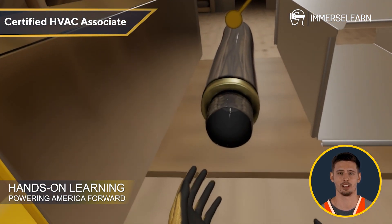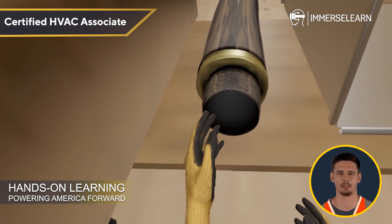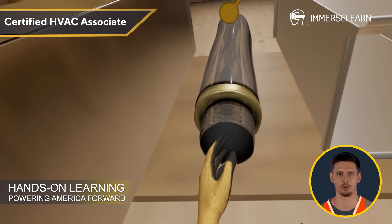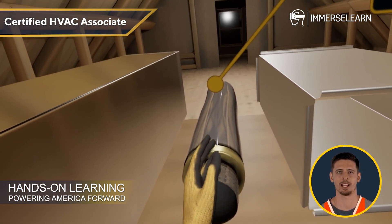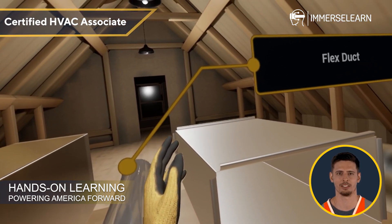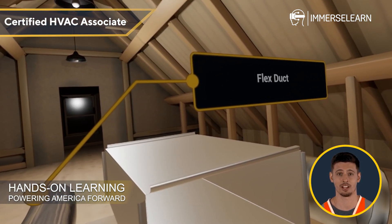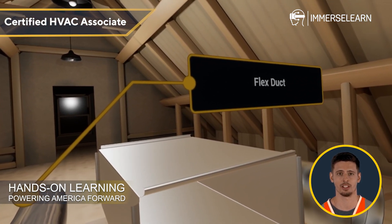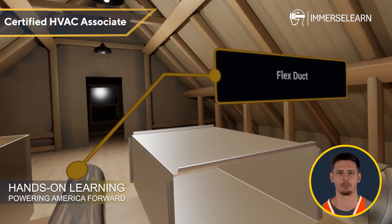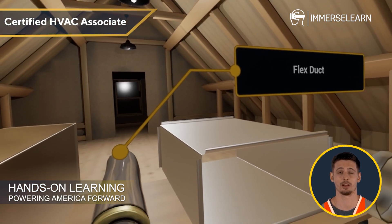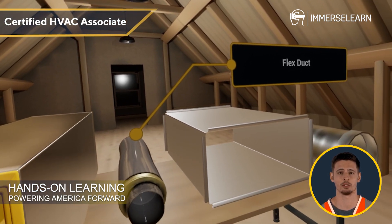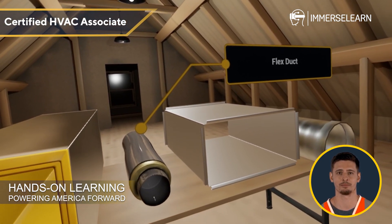Now, let's check out flex duct. This lightweight option is made from a wire coil wrapped in a plastic liner and insulation. It's incredibly easy to install and perfect for maneuvering through tight spaces. But be careful — too many bends or improper installation can restrict airflow and reduce efficiency.